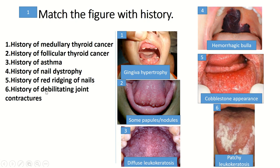A history of red striations on the nails is a characteristic finding of Darier disease, matched with diffuse leukokeratosis in figure 3. And a history of debilitating joint contractures could be a finding of juvenile hyaline fibromatosis, which manifests with gingival hypertrophy as seen in figure 1.